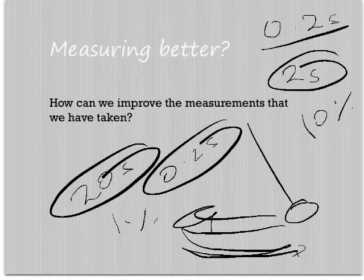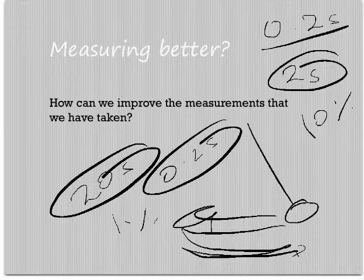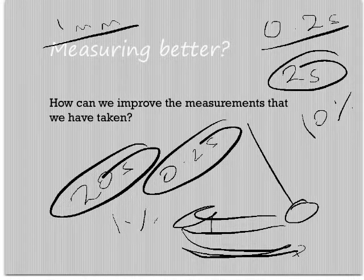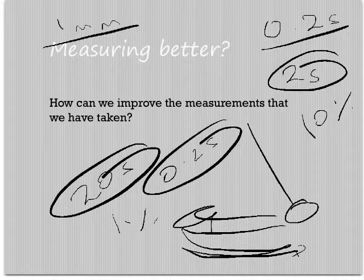So by increasing the time you have made your error much less. Also, if you think about a one millimeter ruler, one that has the millimeter divisions, if you measure something that was two millimeters...